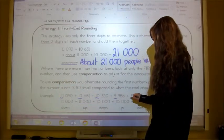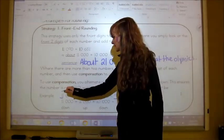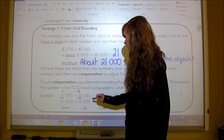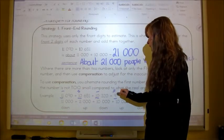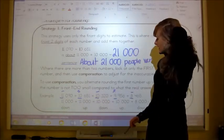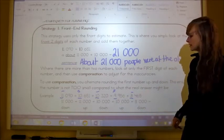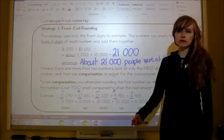I look at these front digits. This one, I'm going to keep the same. This one, I'm going to go up. This one, keep the same. This one, go up. This one, keep the same. Now I've got 11,000 plus 11,000 plus 10,000 plus 8,000. And then I have a more accurate answer.